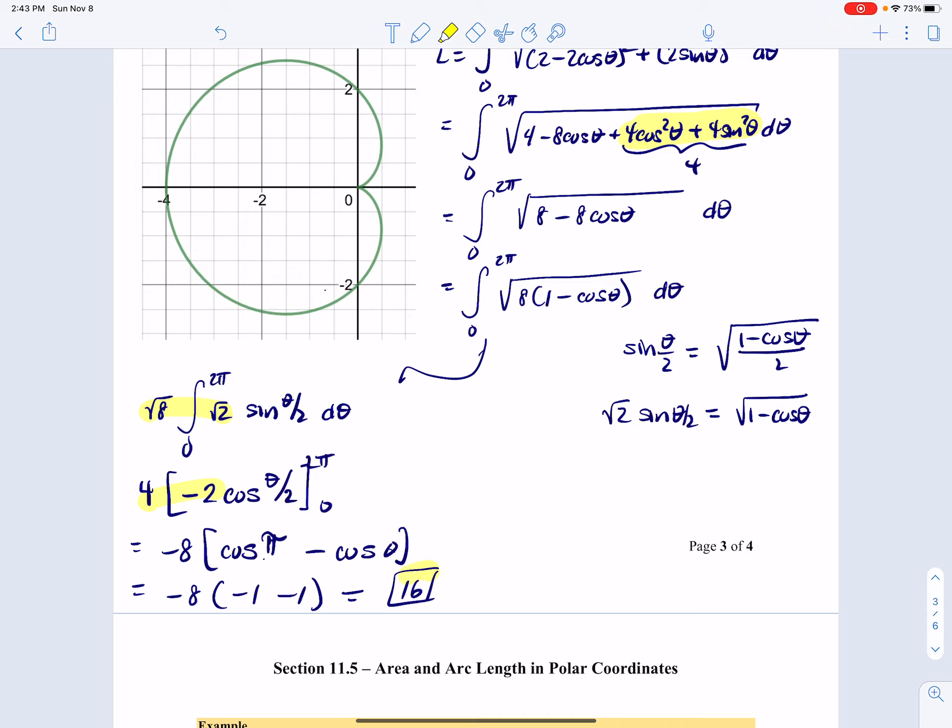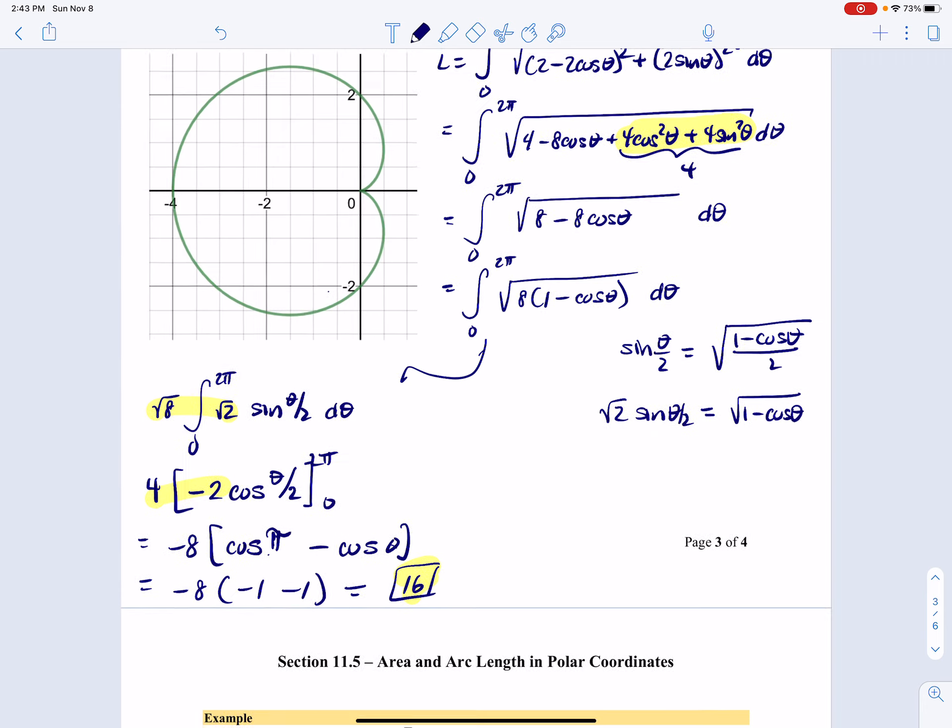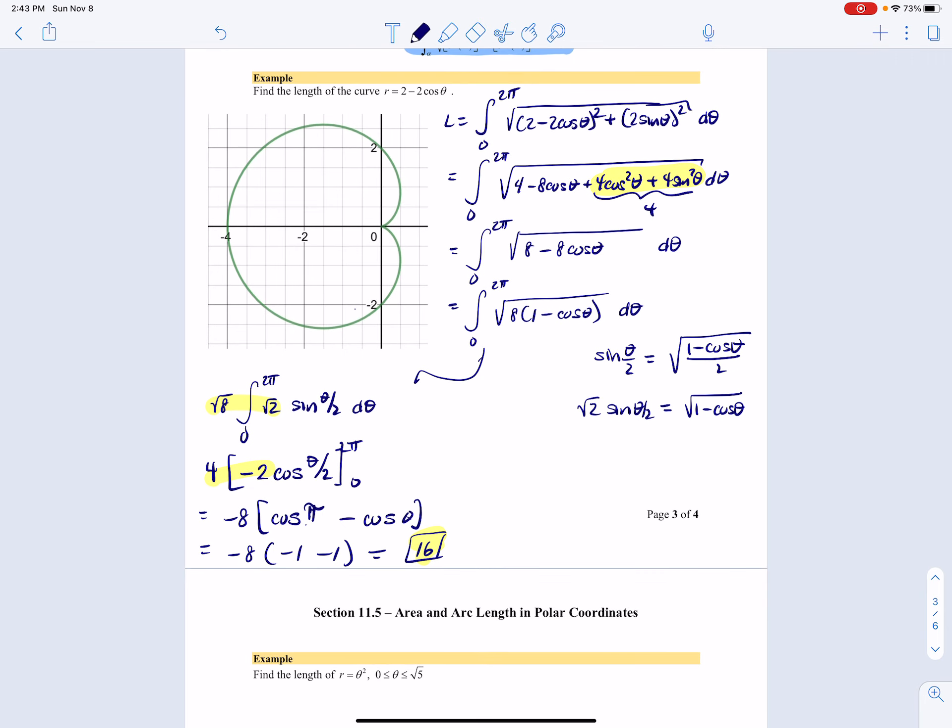And that is the length of our curve. Who'd have thought that that would come out to be such a nice number? Turns out cardioids like this, they do. Okay. And there we have it.